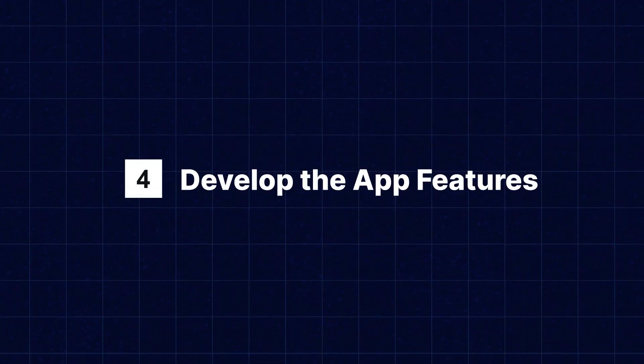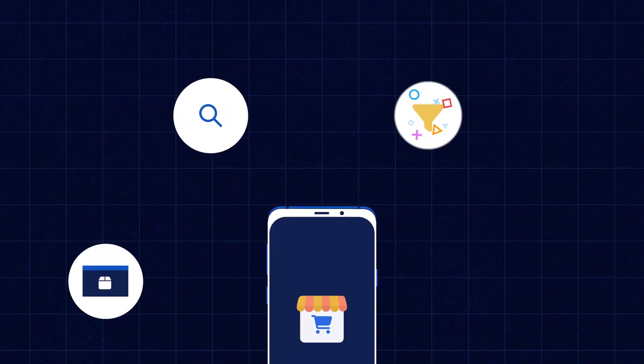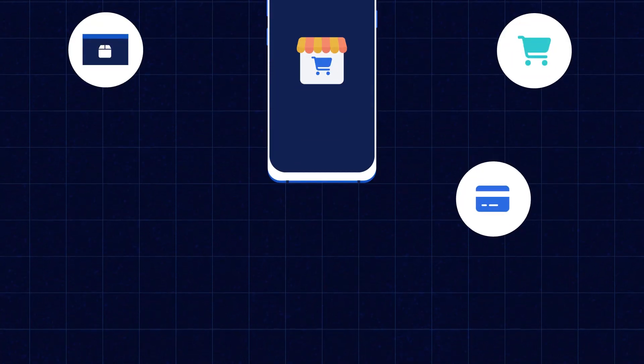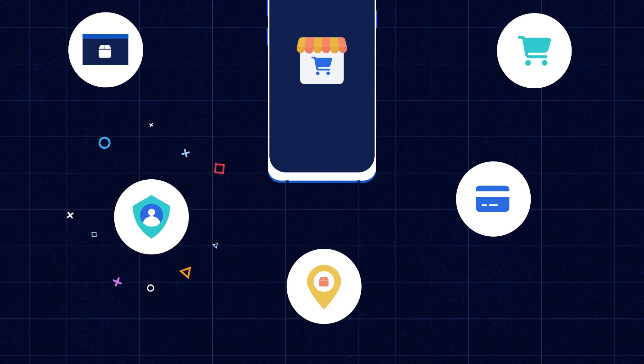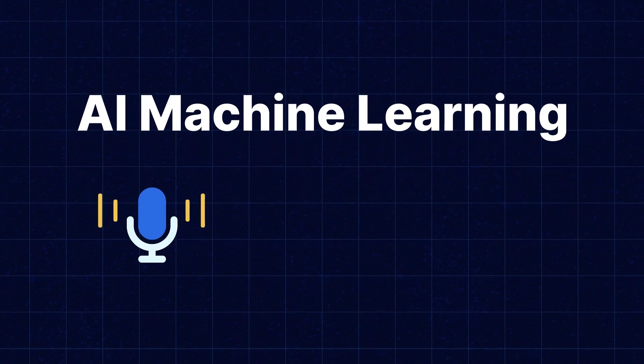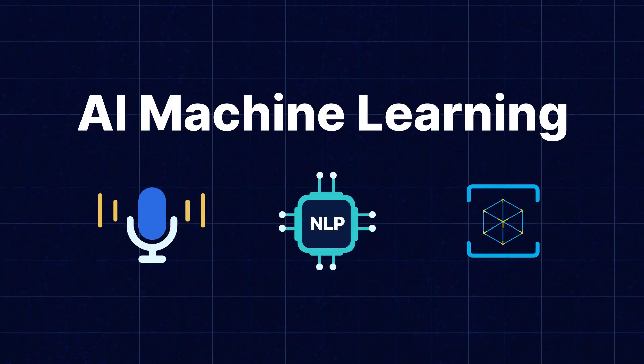Step four: Developing the app features. Now let's start developing the core features for your mobile application. Focus on essential functionalities such as product browsing, search, filters, shopping cart, secure payment integration, order tracking, and user authentication. Additional features include AI and machine learning, voice search with natural language processing, AR view, social authentication, OTP SMS, number login, social login, and many more.